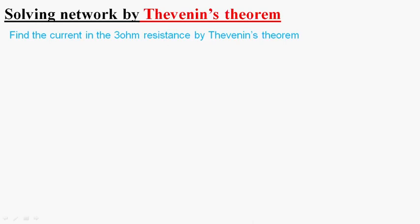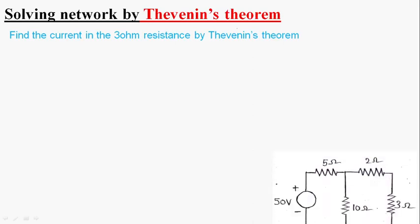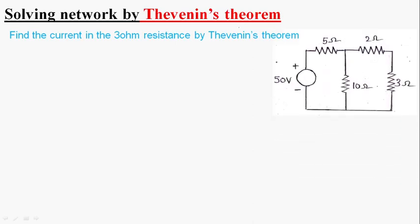Today, we will solve a simple network by using Thevenin's theorem. This is the network and here it was asked to find the current in the 3 ohm resistance by Thevenin's theorem. We have to find the current flowing through this resistance.